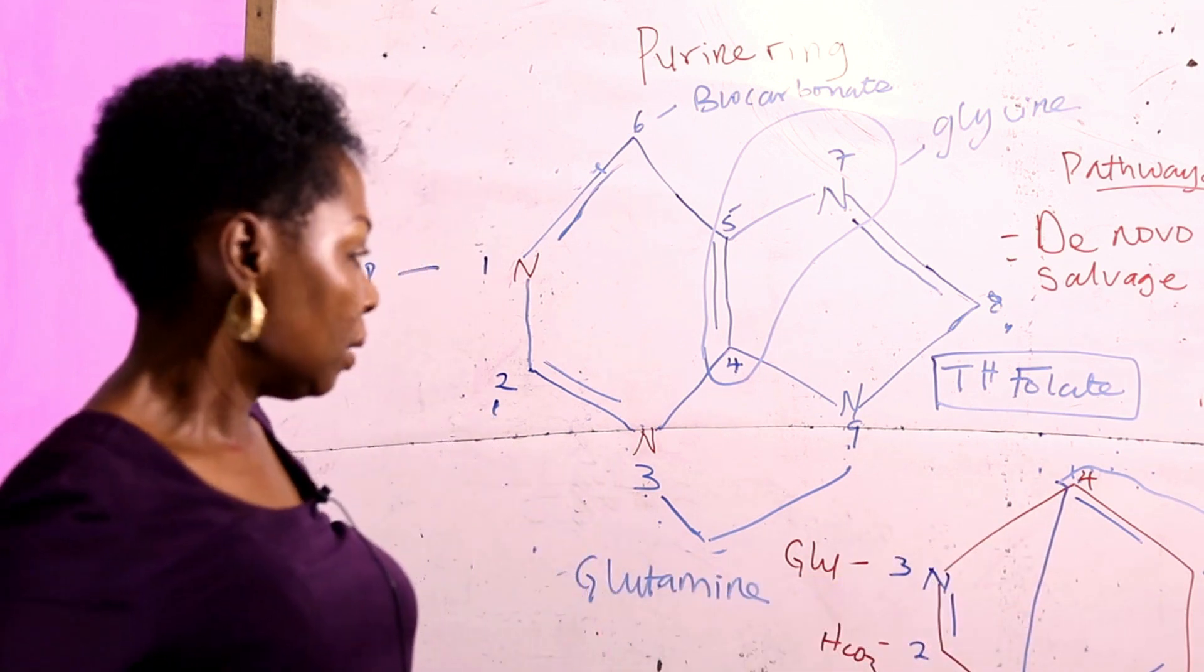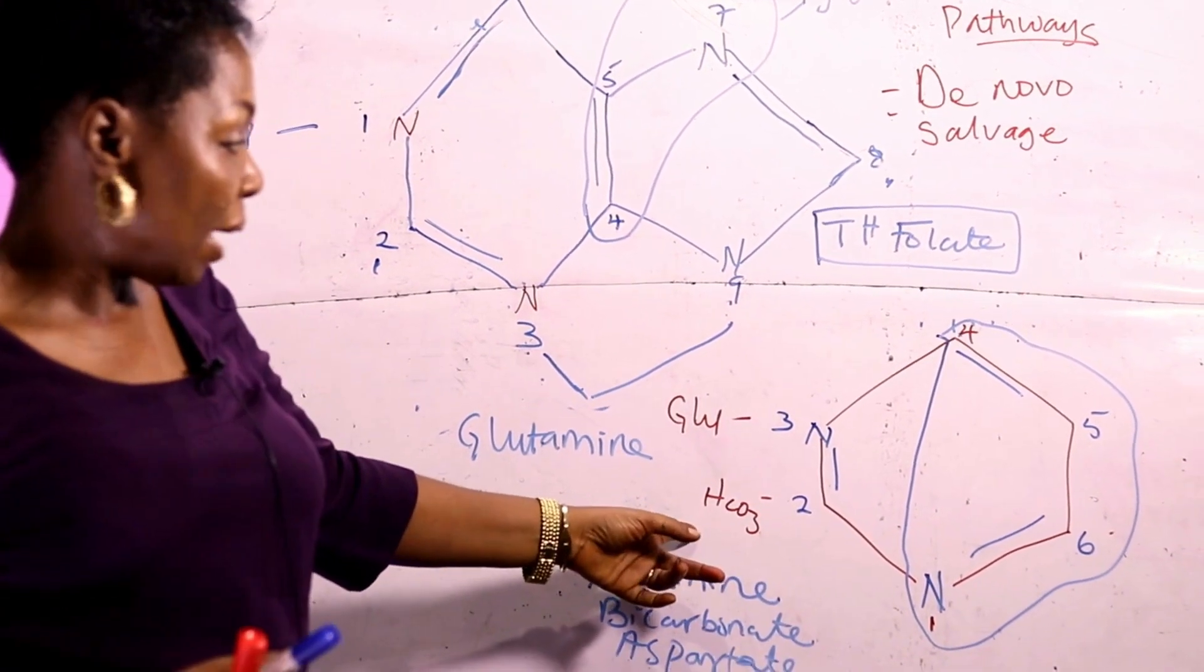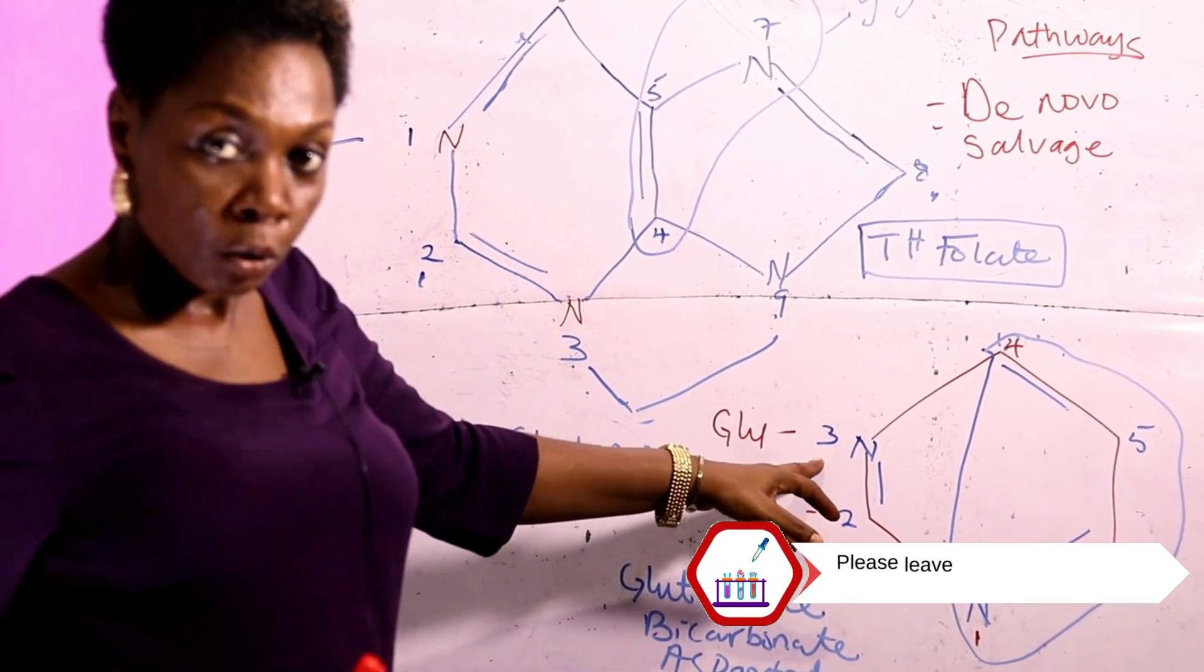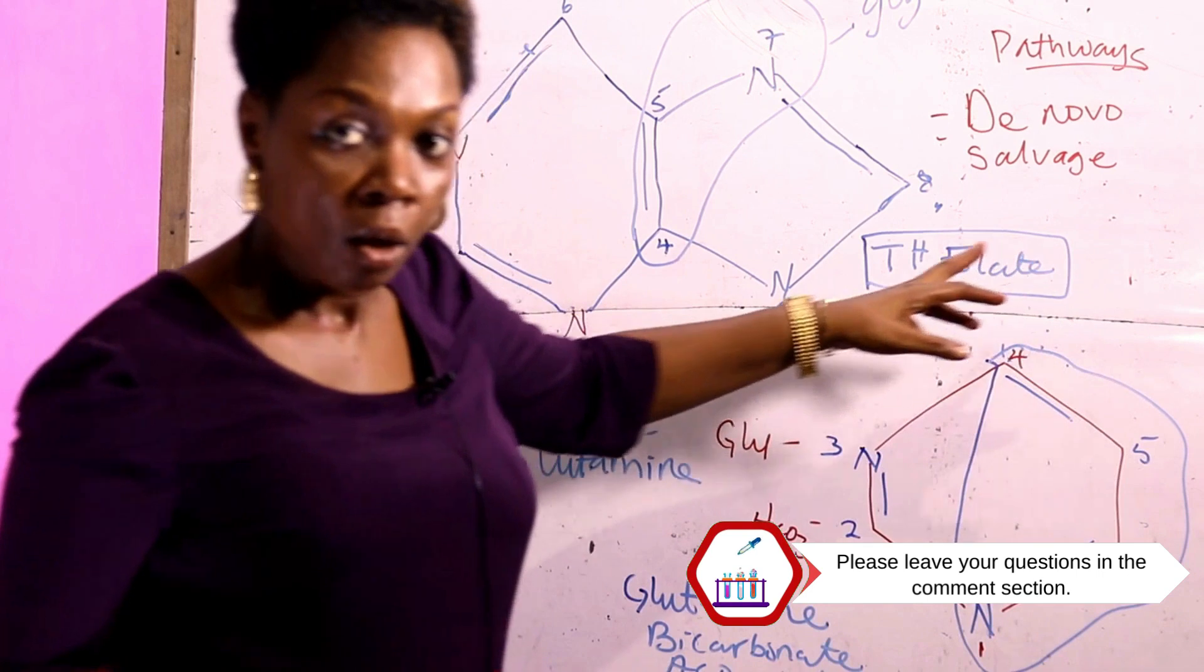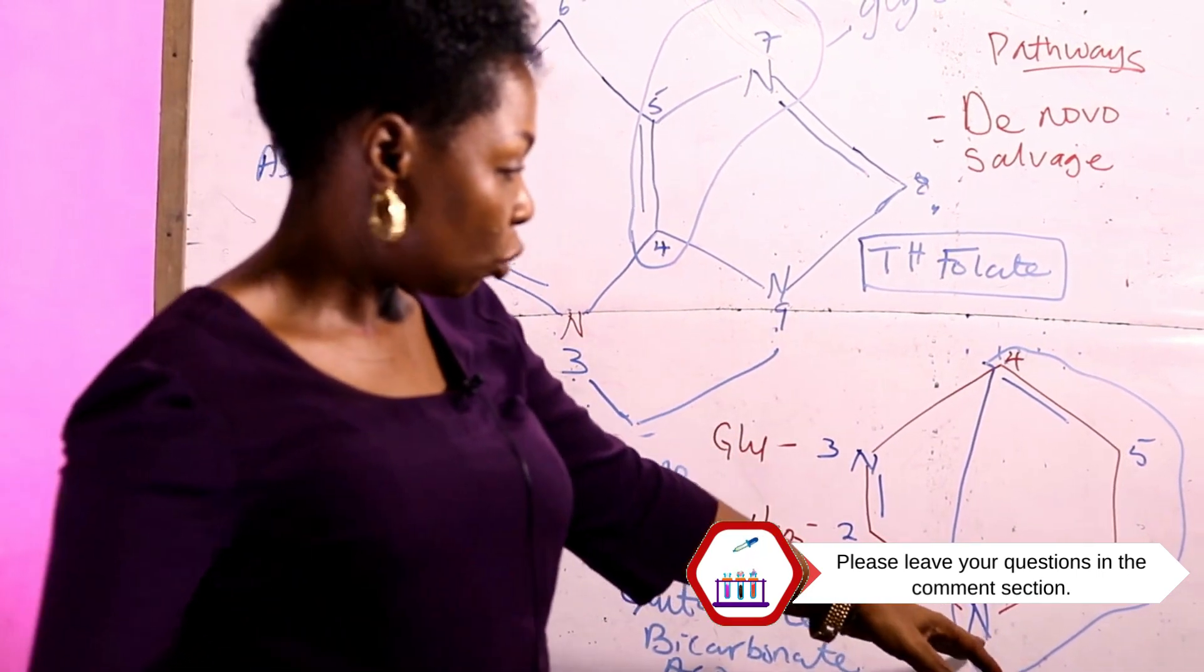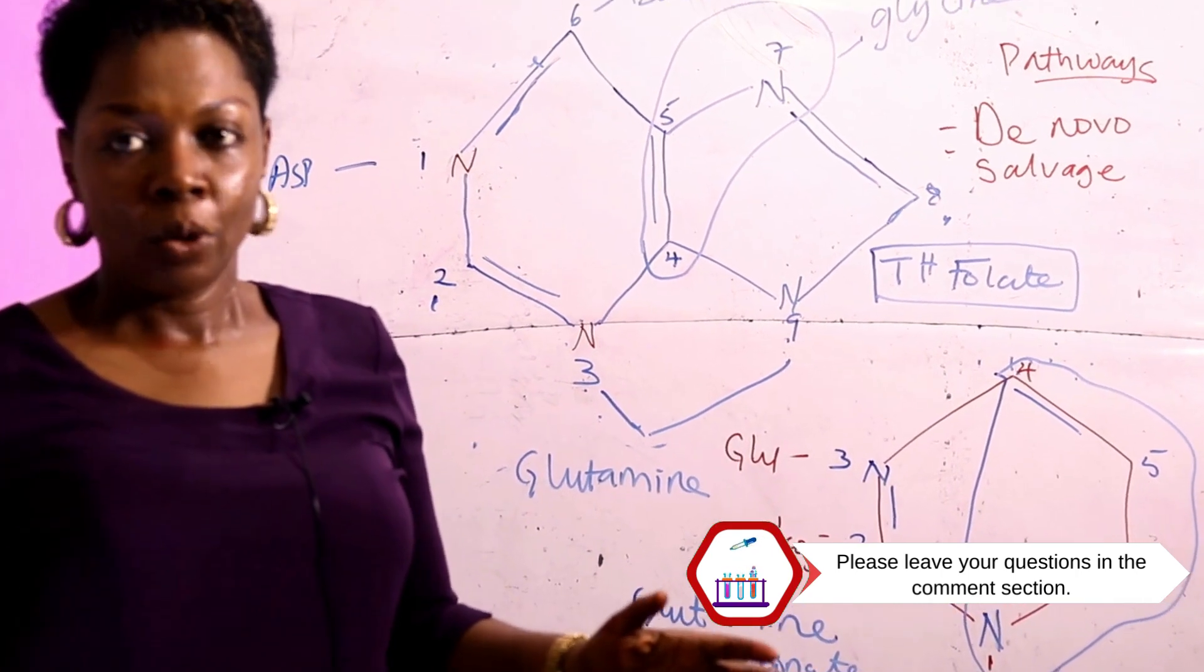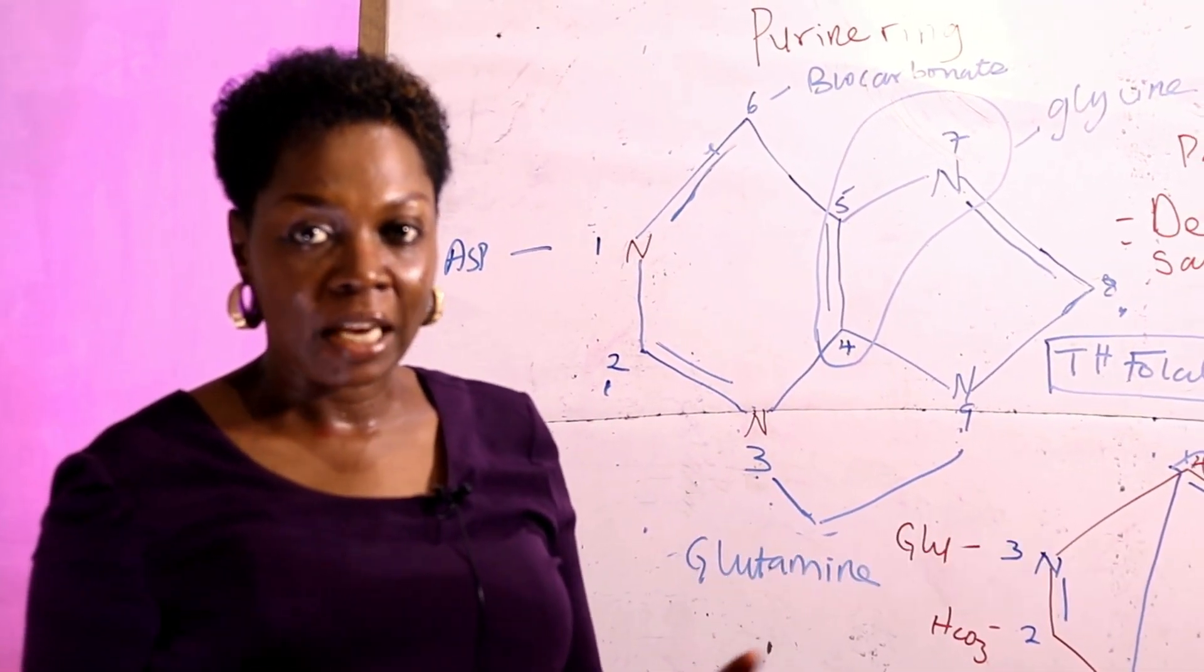Let's look over the purine ring. Position 2 supplied by bicarbonate. Position 3 supplied by glutamine. And then you have glycine furnishing positions 1, 6, 5, and 4. I hope you understand that and we'll look at the metabolism proper in the next section.